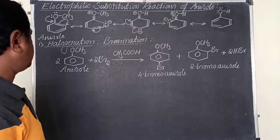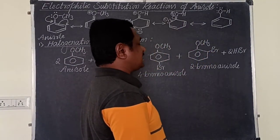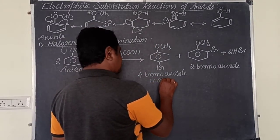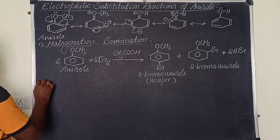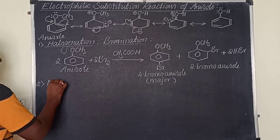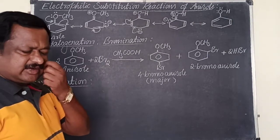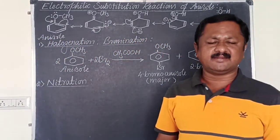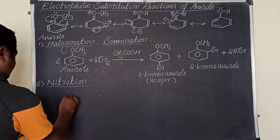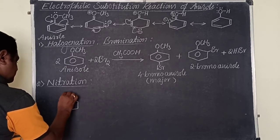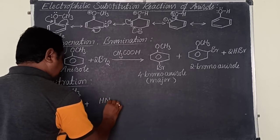Anisole reacts with a bromine molecule in the presence of ethanoic acid to give 4-bromo anisole and 2-bromo anisole. Para is the major product — we get about 90% para-bromo anisole as the major product. The second electrophilic substitution reaction is the nitration of anisole.